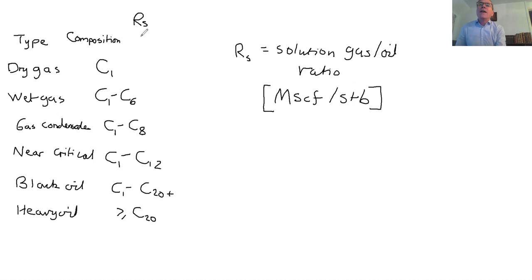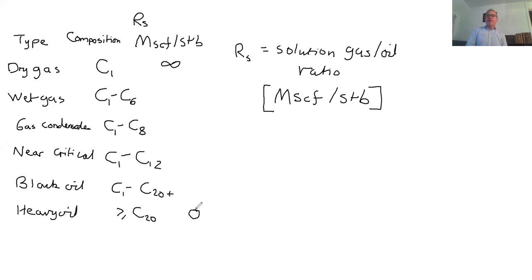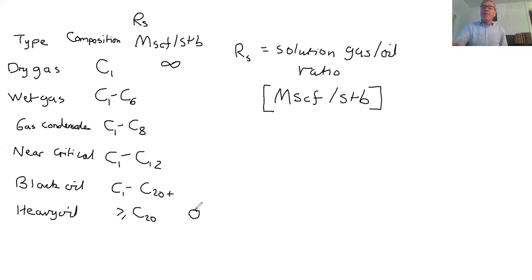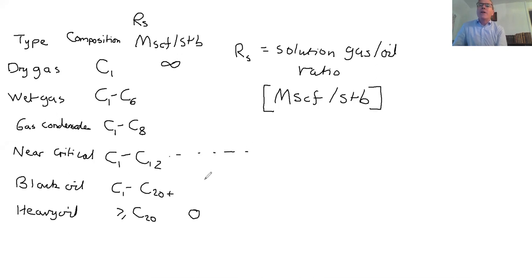We can write down two limits right away. For a dry gas there's only gas and no liquid, so Rs is infinite. For a heavy oil, essentially no gas dissolves in the oil, so Rs is zero. The near critical oil is the dividing line — on one side it's more oil-like, on the other side it's more gas-like.